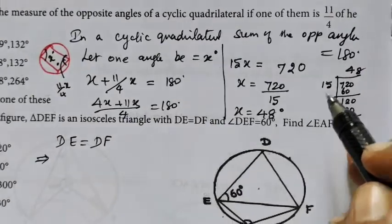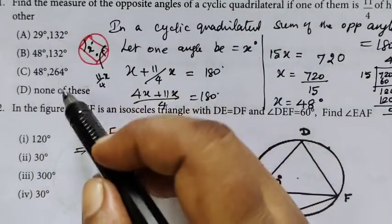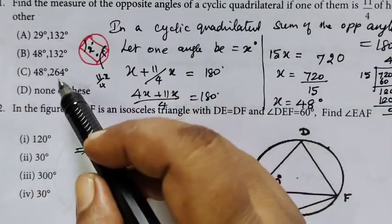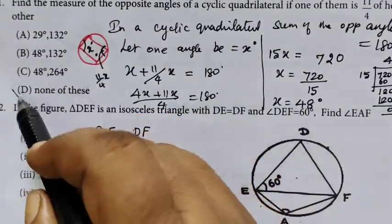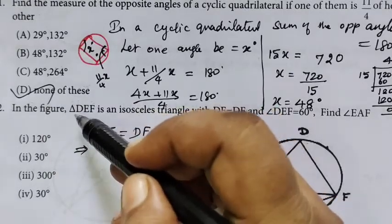But in the options, 48 is listed, so the answer is none of the above.